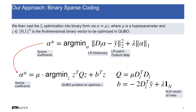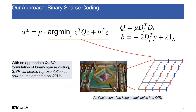In our approach, we make the modification of casting the aforementioned L1 optimization into binary form via a discretization step involving a hyperparameter mu. Following this discretization step, we find that the L1 optimization objective has a QUBO form, with clear expressions for Q and B obtained from terms in the L1 optimization objective. With this appropriate QUBO formulation of binary sparse coding, image super-resolution by sparse representation can now be implemented on QPUs — that is to say, a form of super-resolution can now be solved using quantum computers.